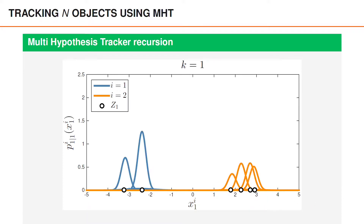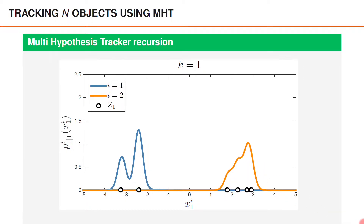On this slide we have visualized the different components in the marginal posterior densities. Each Gaussian component is scaled according to the posterior probability of that association. As expected, we have two significant hypotheses for object one and four significant hypotheses for object two. Looking at the marginal densities, object one has two peaks and object two has a single peak.